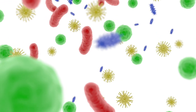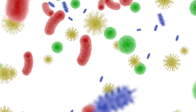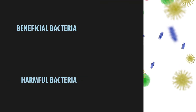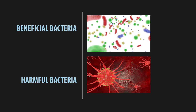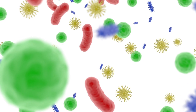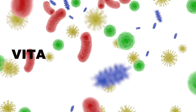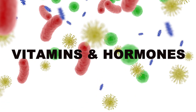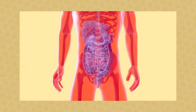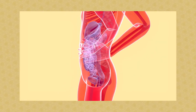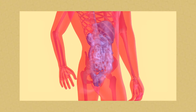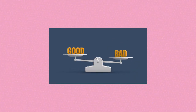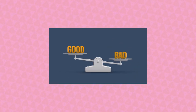It contains hundreds of different bacterial species that can be divided into two main groups: beneficial bacteria and harmful bacteria. Beneficial bacteria help the body break down food, absorb nutrients, protect from disease-causing microbes, and produce certain vitamins and hormones. In contrast, harmful bacteria can cause digestive issues such as diarrhea or irritable bowel syndrome, as well as increase inflammation throughout the body. It is important to maintain a healthy balance between beneficial and harmful bacteria to keep gut flora in optimal condition.